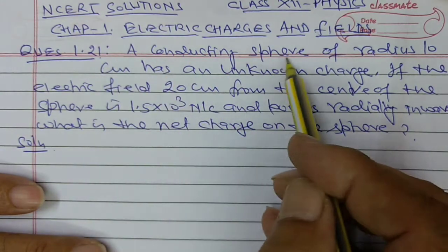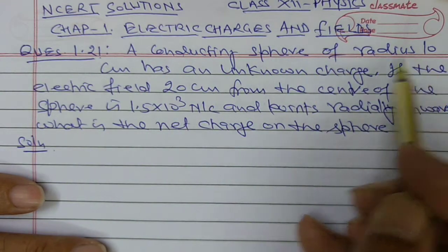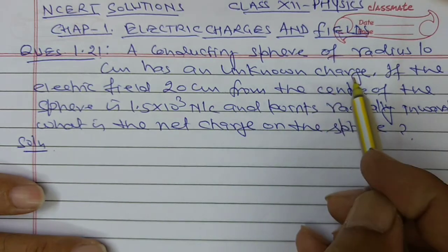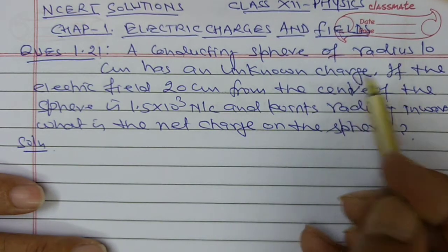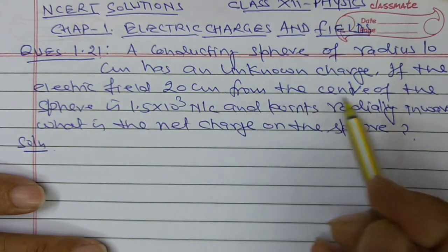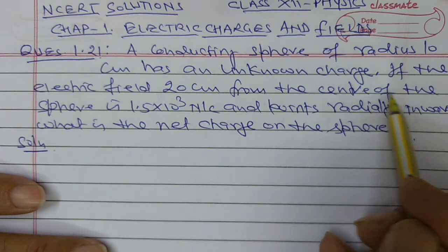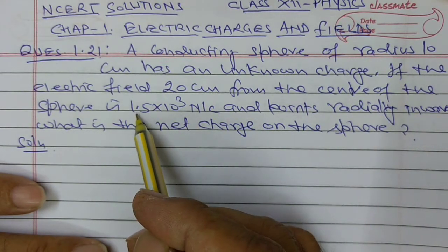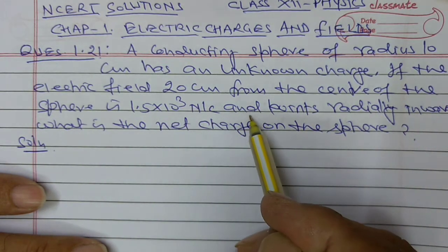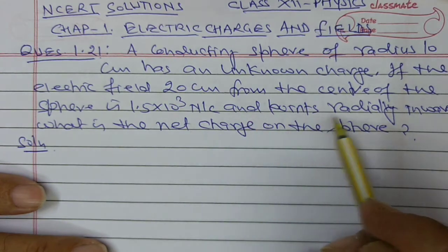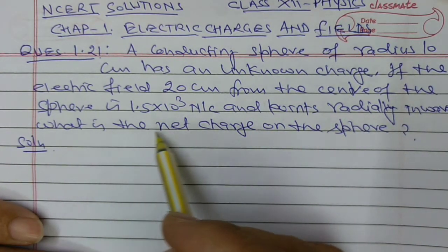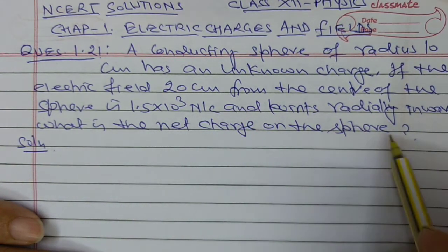A conducting sphere of radius 10 cm has an unknown charge. If the electric field 20 cm from the center of the sphere is 1.5 into 10 to the power 3 N per Coulomb and points radially inward, then what is the net charge on the sphere?